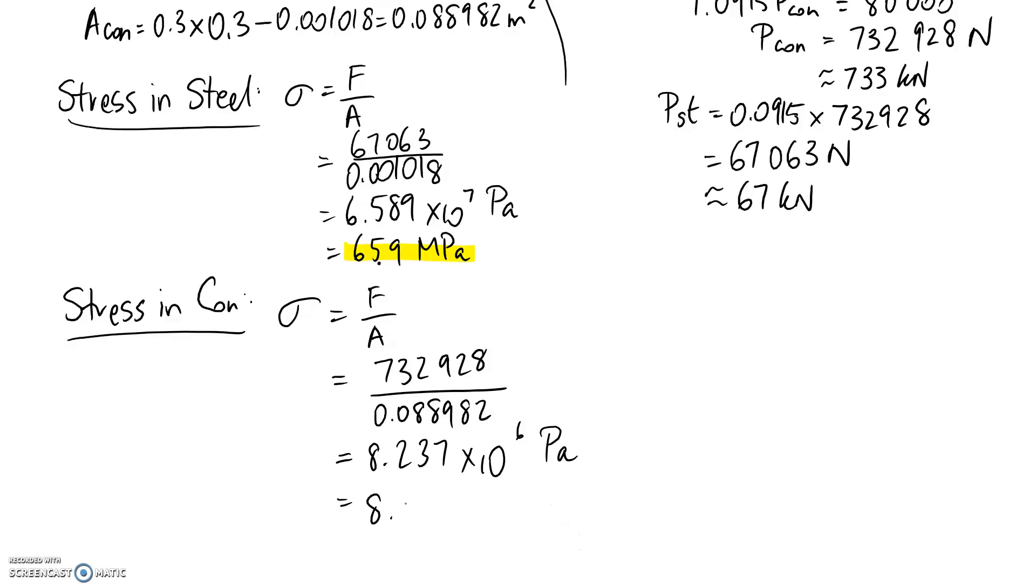So it's 8.237 by 10 to the power of 6. And if we divide by 10 to the power of 6, let's round it as well. We're going to end up with 8.24 in megapascals.